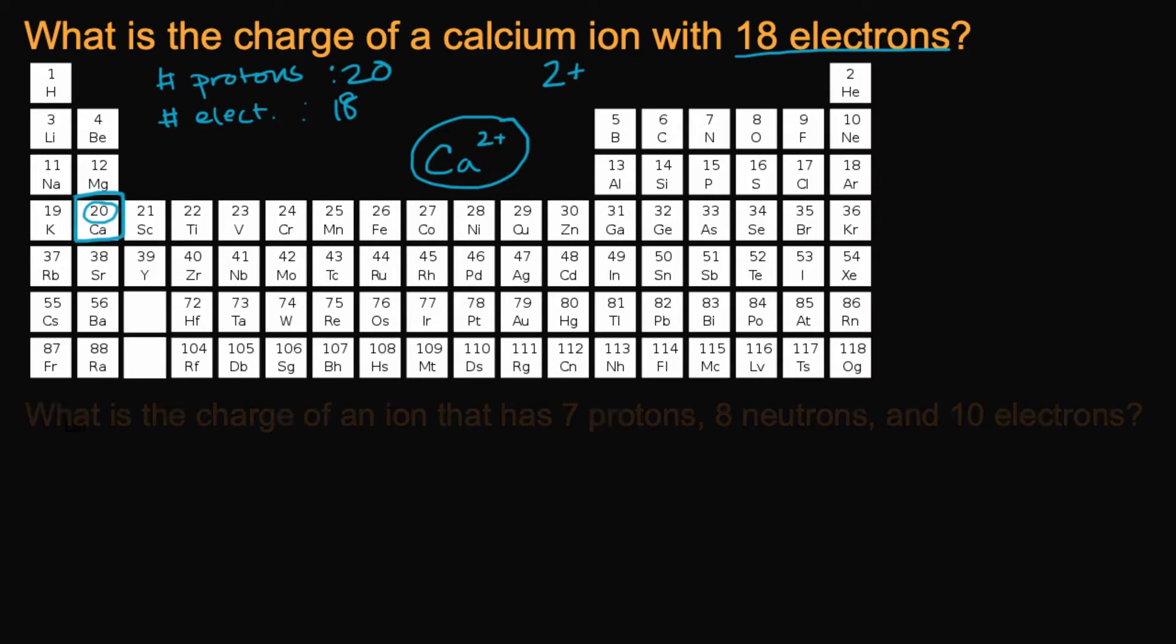Let's do another example over here. So if I were to ask you what is the charge of an ion that has seven protons, eight neutrons, and 10 electrons, pause this video and think about what that would be.